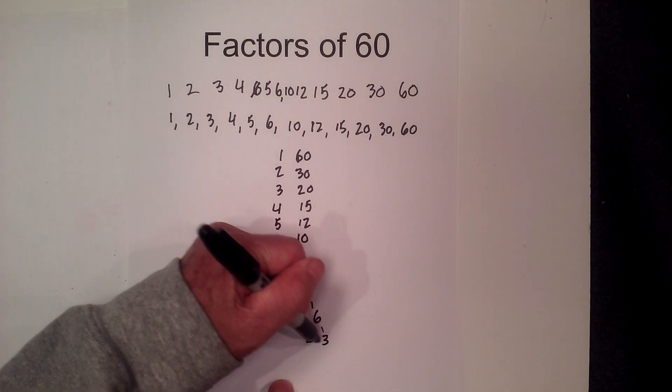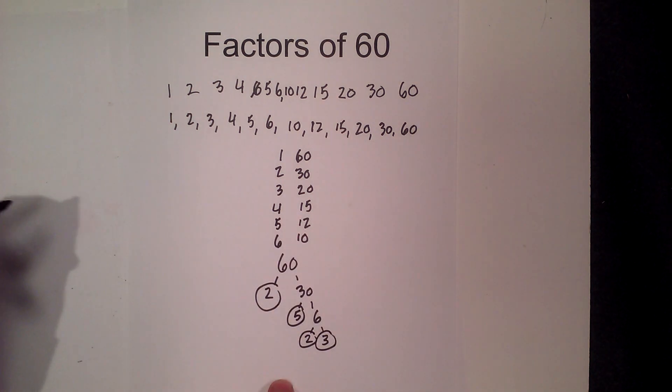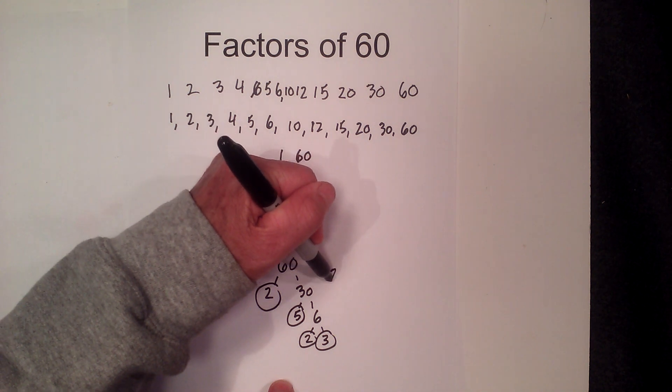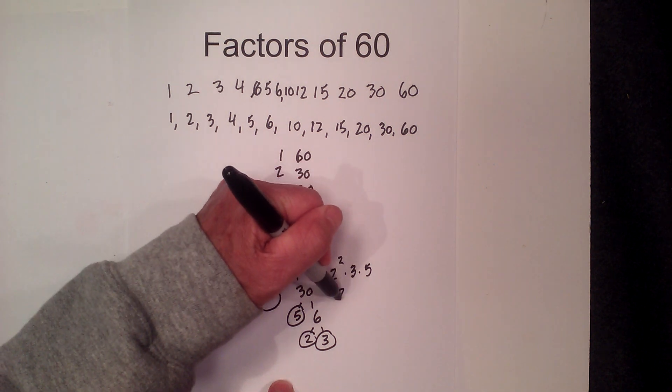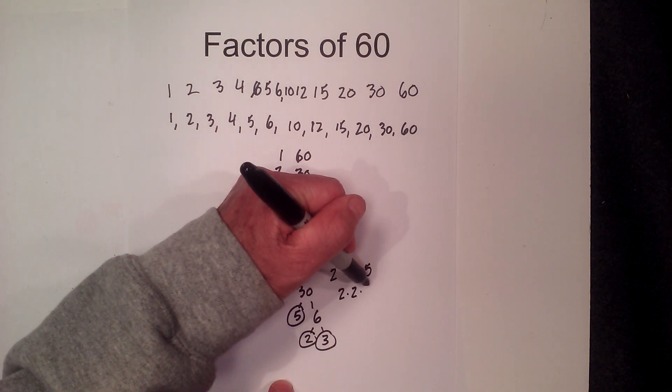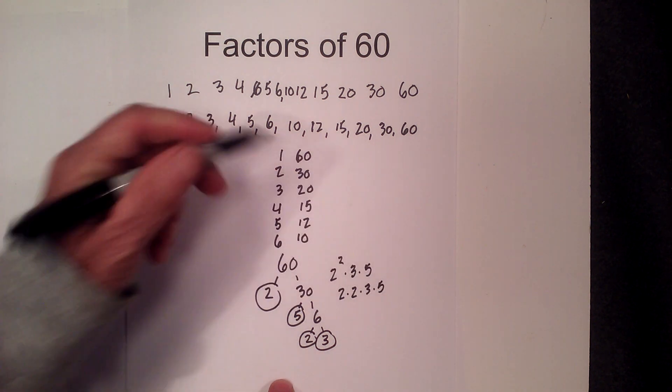And then 2 times 3 equals 6. They're both prime. So you can write the prime factors as 2 squared times 3 times 5 or 2 times 2 times 3 times 5.